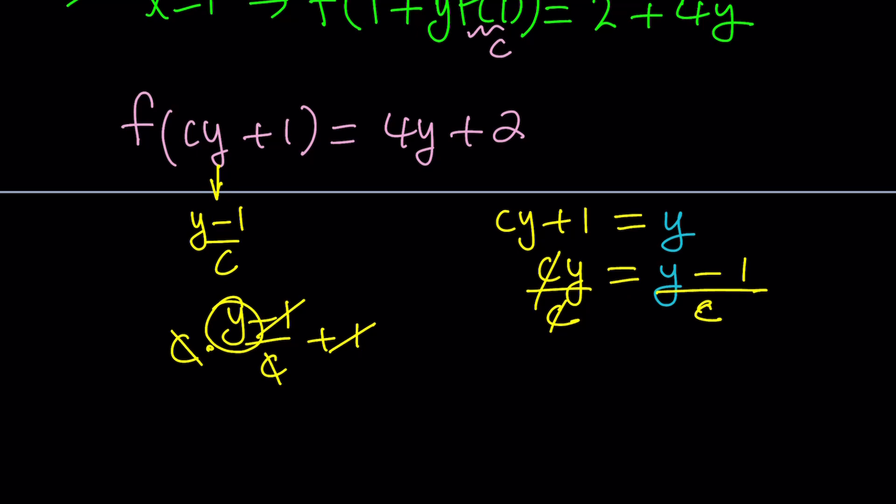Obviously, if this is confusing, you can use a different variable like a t or z, whatever. Don't use x because x is a little different in this case. But you can do that. Make sense?